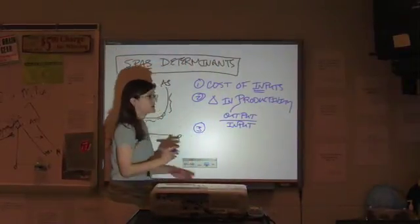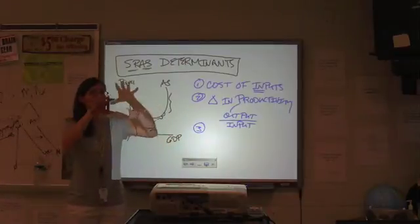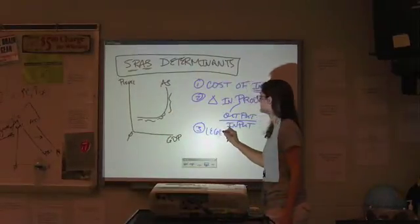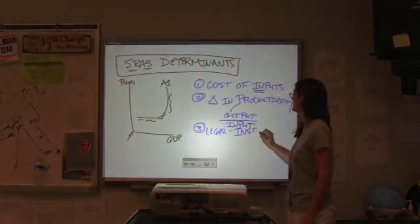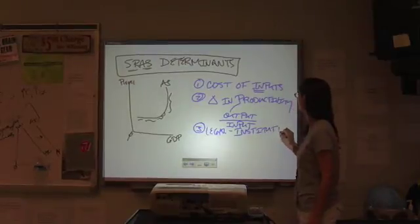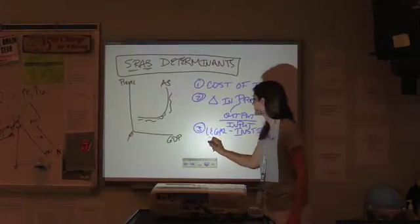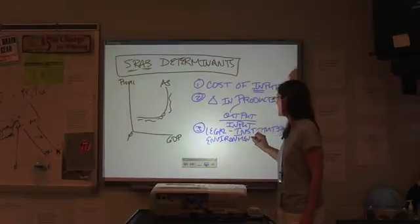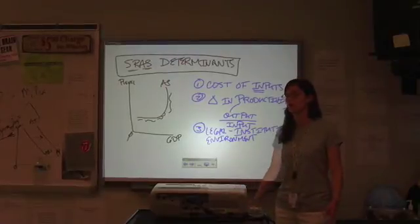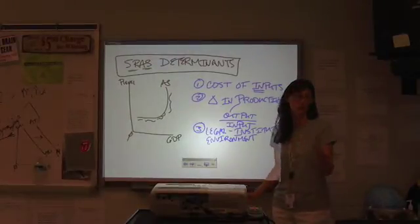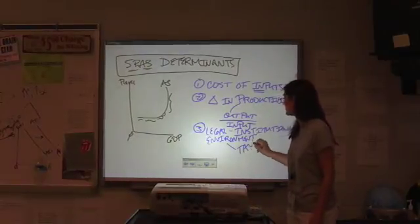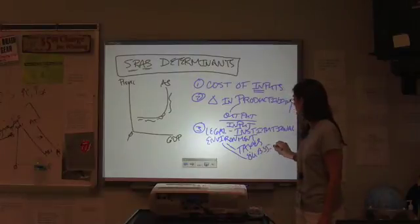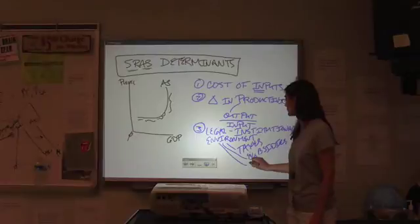Okay, so those are the first two. Now, the third one, and this is kind of one of those big umbrella-type concepts. First, the legal institutional environment. Now, what does that mean in practical terms? Virtually nothing. But let's break that down into a couple of categories that we can actually work with. So, taxes, subsidies, and regulation.